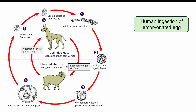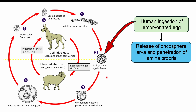Humans can in some way be like the sheep or goats in this example, wherein they accidentally ingest an embryonated egg from a dog or other carnivore. Human infection starts at this stage of the cycle — the embryonated egg in the feces. As occurs in the intermediate host, whether sheep or goat, there is a release of the onchosphere larva from that egg and a penetration of what we call the lamina propria.